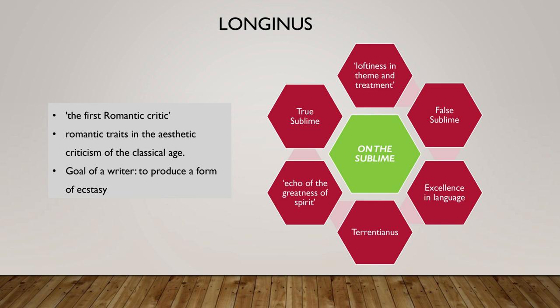Longinus defines sublimity as the echo of the greatness of spirit — the elevated theme and elevated expression — the quality in great writers' works that makes a work immortal. He talks about two kinds of sublimity: true sublimity and false sublimity. True sublime is lofty ideas conceived in lofty language, something which lifts the soul of the reader as well as the writer. True sublimity pleases all and pleases always.